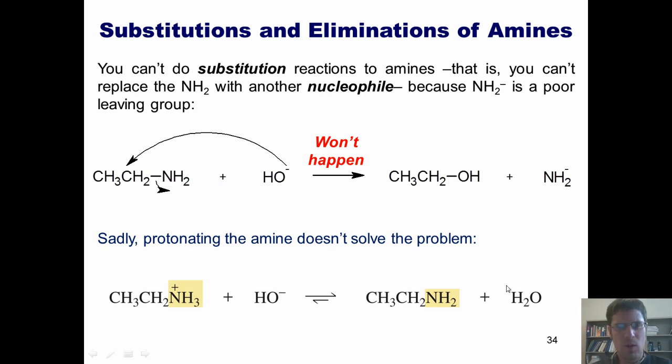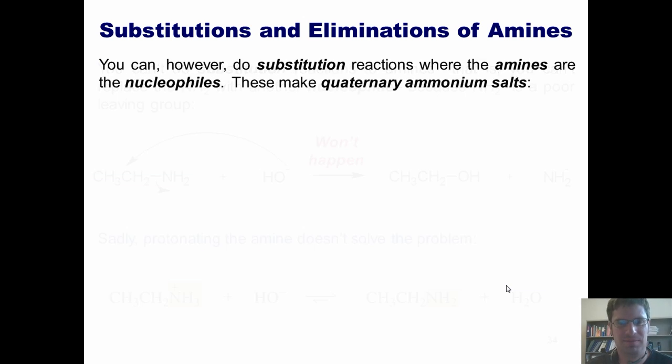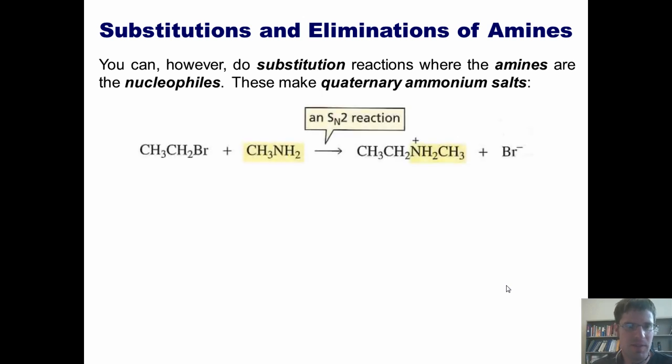So once again, it begs the question, is there anything that amines can do that's useful? Well, the answer is yes. You can do substitution reactions where the amines are the nucleophiles. For instance, if I take a very simple amine like this molecule and treat it with an alkyl halide such as this alkyl bromide, the lone pairs on the nitrogen will come over, form a bond with this carbon, and kick off the bromide to give me this type of intermediate.